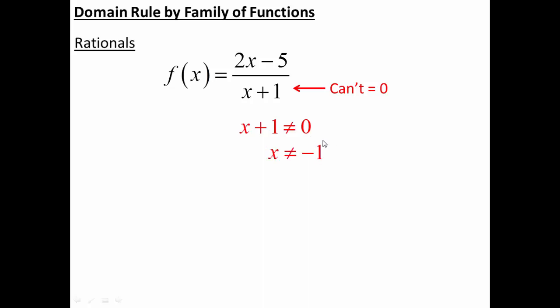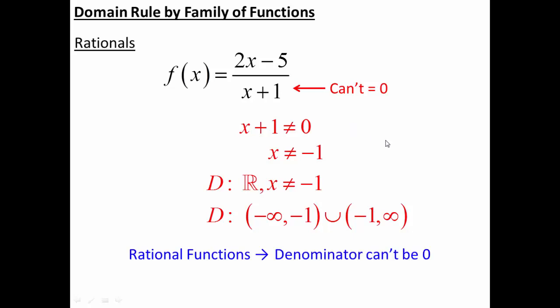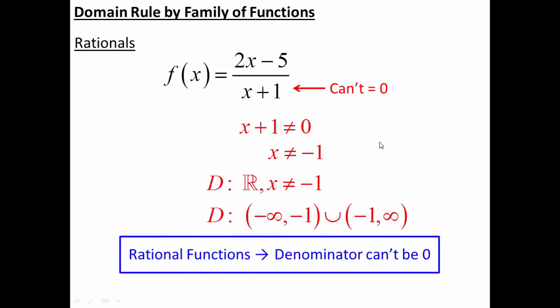If I solve for x, x plus 1 can't be zero, therefore x can't be negative 1. So the domain can be any number as long as x is not negative 1. I can write it as: all real numbers, x cannot equal negative 1, or in interval notation, negative infinity to negative 1 union negative 1 to infinity. So for rational functions, the general rule is: set the denominator equal to zero because the denominator can't be zero.